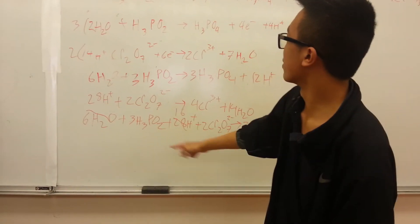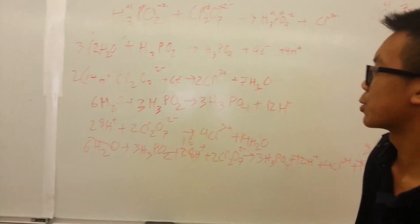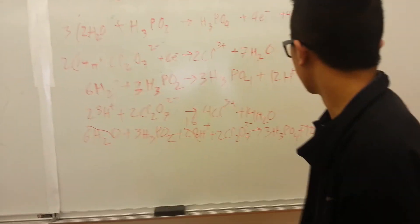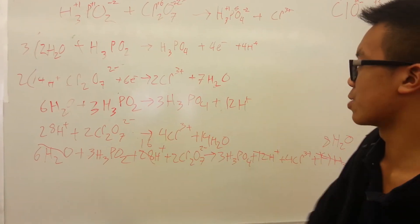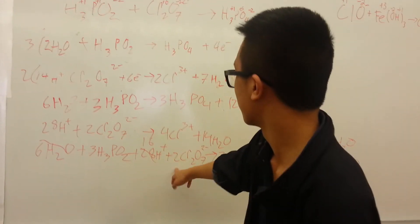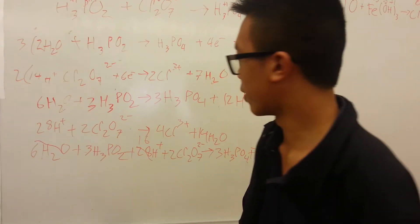So now what we did next is that we eliminated the electrons because they're like terms, and we took out water on both sides here because they're also like terms, and we also cancelled out hydrogens.